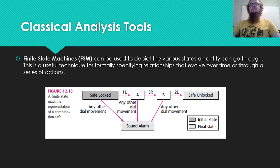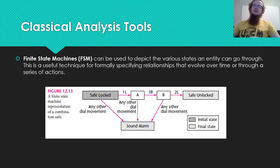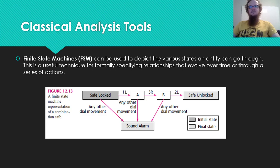You also have finite state machines. While entity relationship models tell you the relationship between specific objects or classes, finite state machines show how state changes after interactions. An example is a safe that is locked — edges on a graph tell you how the state changes and the result of that change. Finite state machines are very good at modeling things like elevator state. This is more about the internal state of the entity than its relationship with other entities.